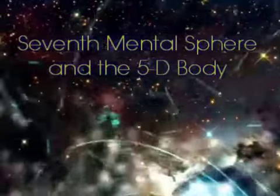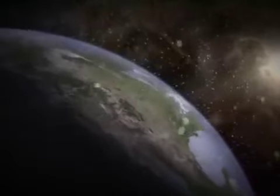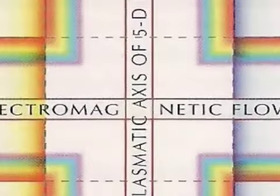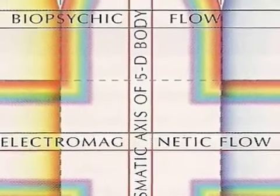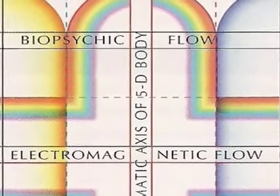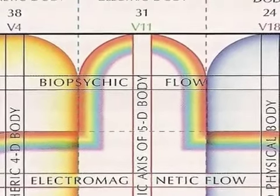Between the third and fourth dimensional bodies is the rainbow body of radiance. The seventh mental sphere holomind perceiver governs all three time dimensions of the fifth dimensional body: 7, 8, and 9. Seven plus eight plus nine equals 24, the number of radiance, and twice the number of the body of the temple, 12.